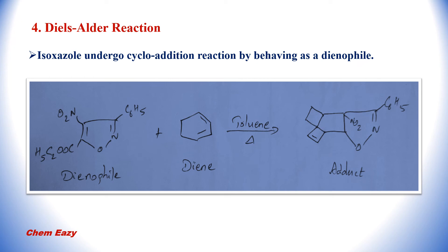The fourth reaction is the Diels-Alder reaction. In the Diels-Alder reaction, one dienophile and one diene react to produce an adduct. In this reaction, Isoxazole undergoes cycloaddition by behaving as a dienophile. Here you can see that the Isoxazole ring acts as the dienophile and reacts with the diene in the presence of toluene to produce an adduct.